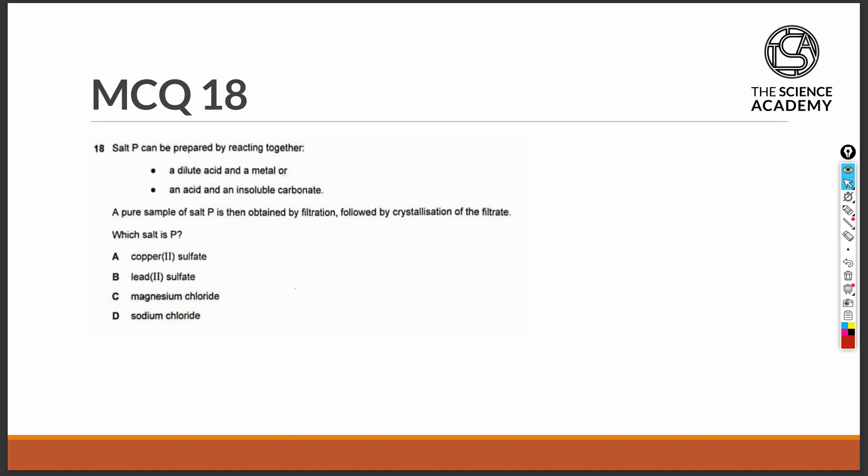Question 18. Salt P can be prepared by reacting together a dilute acid and a metal, or an acid and an insoluble carbonate. A pure sample of salt P is then obtained by filtration followed by crystallisation of the filtrate.